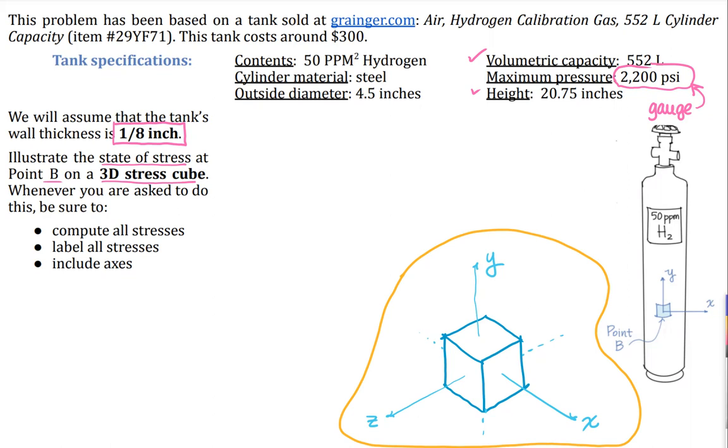What do we know about cylindrical pressure vessels? From the derivation, we learned that we have longitudinal stresses. Those will develop in the direction of the longitudinal axis. In this case, that would be the y axis. Those longitudinal stresses are going to be equal to PR over 2t. That is an approximate formula, but it is good enough for our purposes.